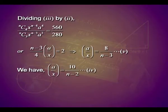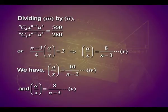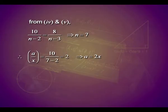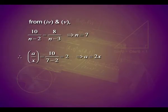Dividing the third equation by the second, simplifying n C 4 and n C 3, and clubbing the powers of x and a, we again get a by x — this time as 8 divided by (n minus 3). So we have a by x equals 10 divided by (n minus 2) and a by x equals 8 divided by (n minus 3). Equating these two expressions for a by x, we solve for n and get n equals 7. But we still have to find a and x. Once n is 7, the condition between a and x gives a equals 2 times x.